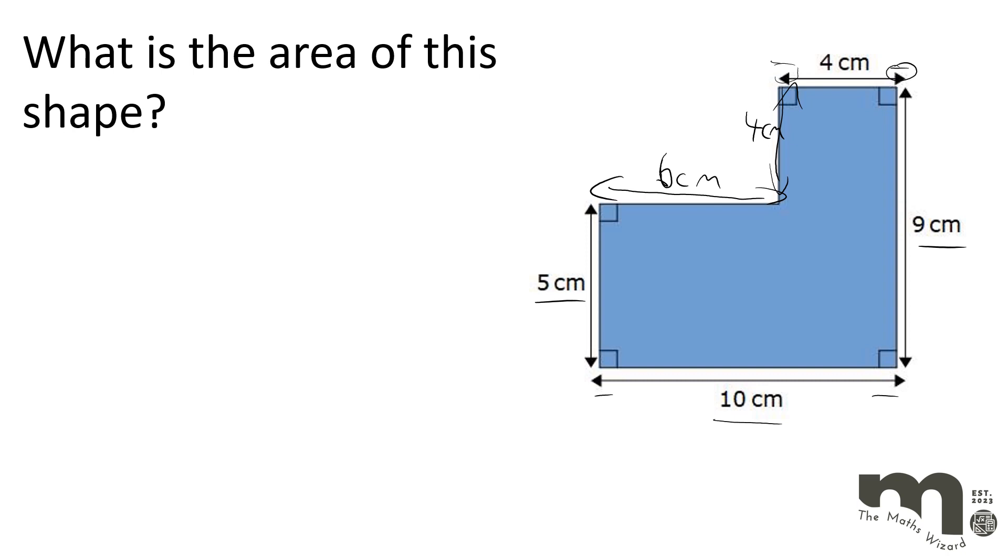look at the area first. So if we do 9 times 4 we get 36. So the way I've split this is I've done it down here - you can split it another way as well but I'm just going to show you this one way. Then we do 6 times 5 to get 30, and if you add those together you'll end up with 66 centimeters squared for your total area.